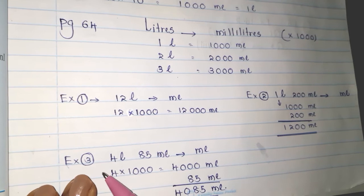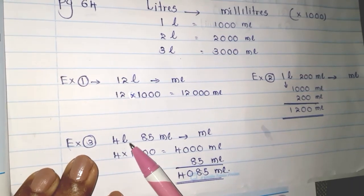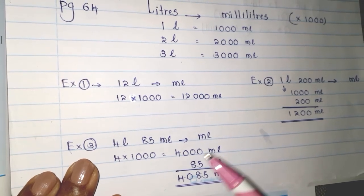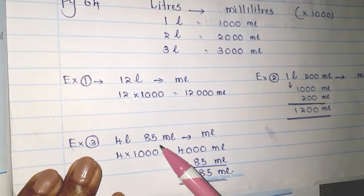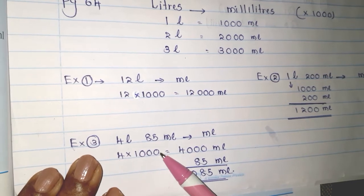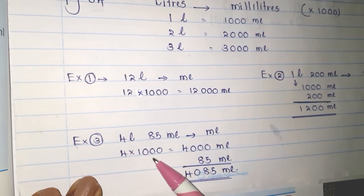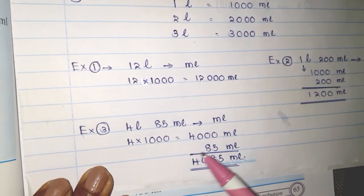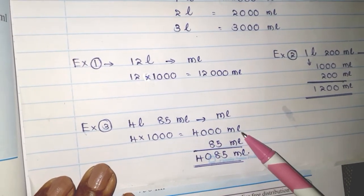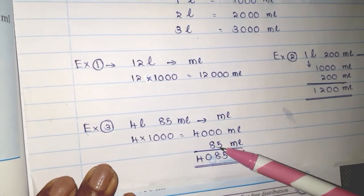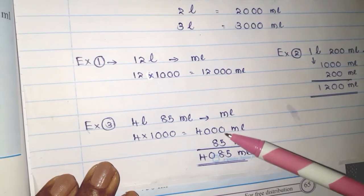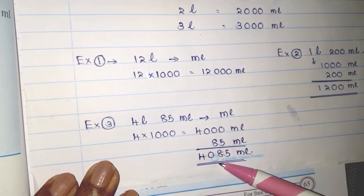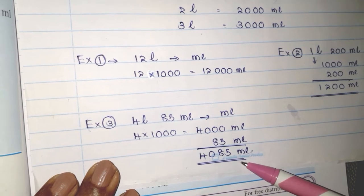Example 3: 4 liters and 85 milliliters — you have to convert into milliliters. 4 liters converted into milliliters: you multiply by 1000, giving 4000 milliliters. The 85 milliliters is already given. Aligning the ones and tens columns, your answer will be 4085 milliliters.